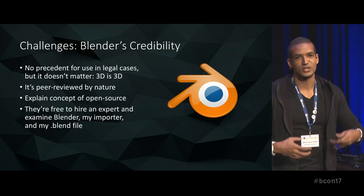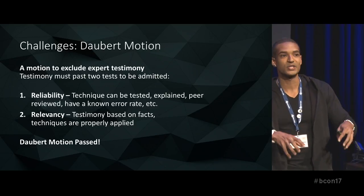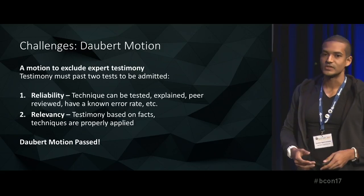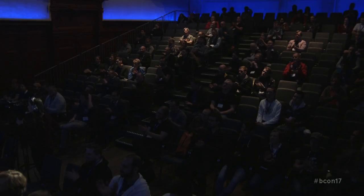That played out well in the deposition — the first questioning by the opposing attorney. Then, going closer to court, there was what's called a Daubert motion, which is a motion to exclude expert testimony. For testimony to pass, it must satisfy reliability — the technique can be tested, explained, peer reviewed, and has a known error rate — and relevancy, that testimony is based on the facts of this particular case and those techniques are properly applied. I actually entered the source code of my importer into evidence. We passed the Daubert motion, which opened up a lot of doors. This animation was admitted into evidence in federal court and the case settled.